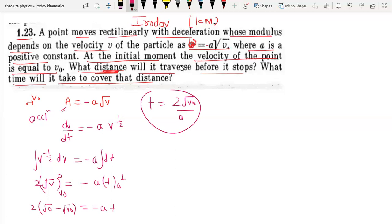Now I have to find the distance it will travel. For that I need to integrate this again. So what can I do? I'll write it again: for acceleration, minus A root V. For A, I'll write V dV by dS equal to minus A root V.